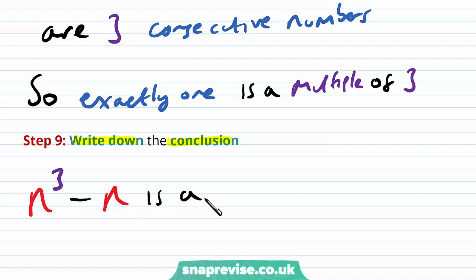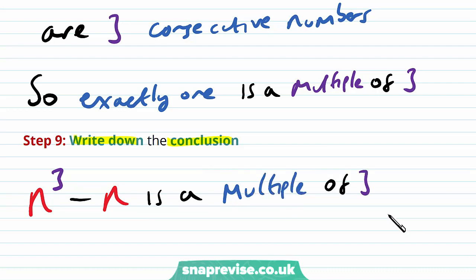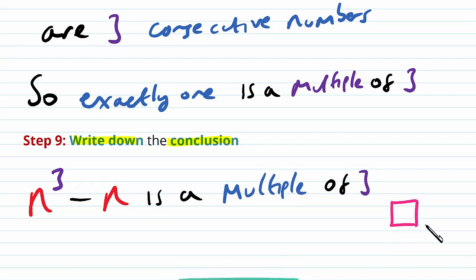It is divisible by 3, except this time we've done it via proof by deduction. In either case, we've proved our conjecture.